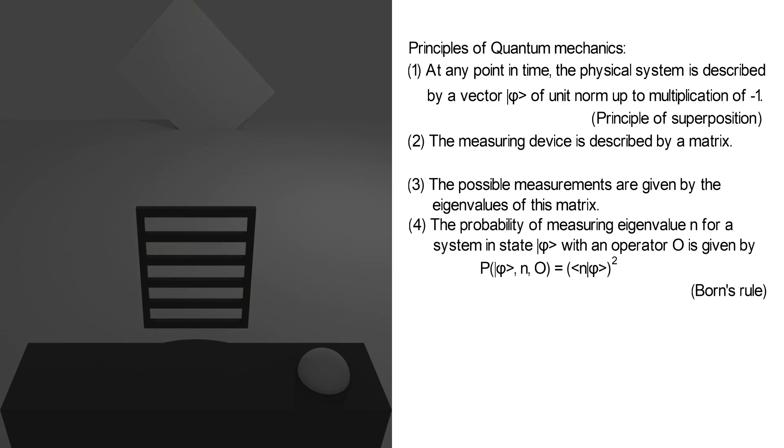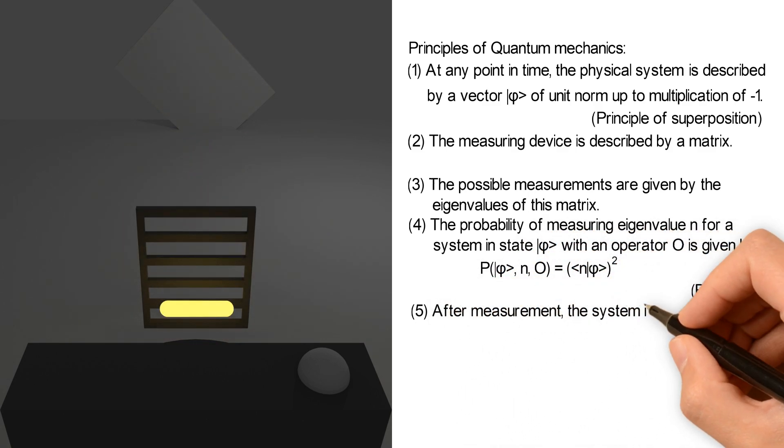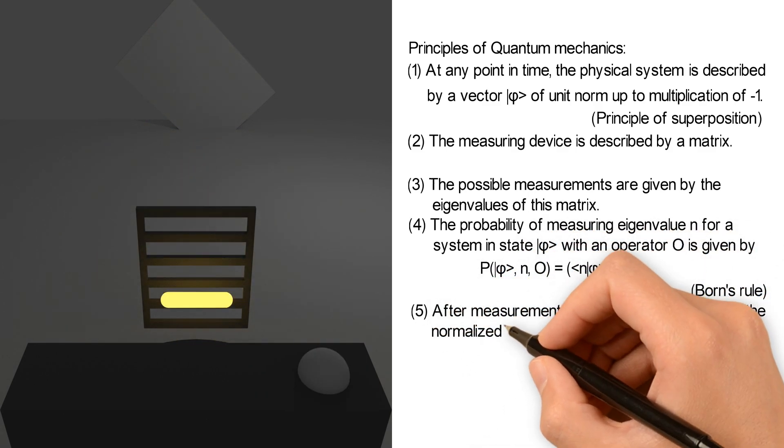With the help of a second filter, one finds that after passing the filter the photons are actually oriented parallel to the filter. But the state describing this orientation is always the normalized eigenvector corresponding to eigenvalue 1, no matter in which direction the filter is oriented. This observation gives us the last principle. After measurement, the system is described by the normalized eigenvector corresponding to the measured eigenvalue.